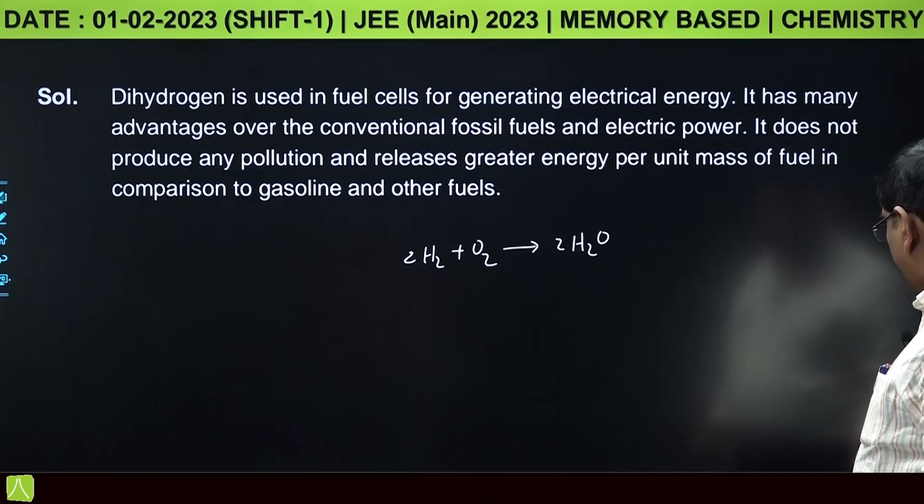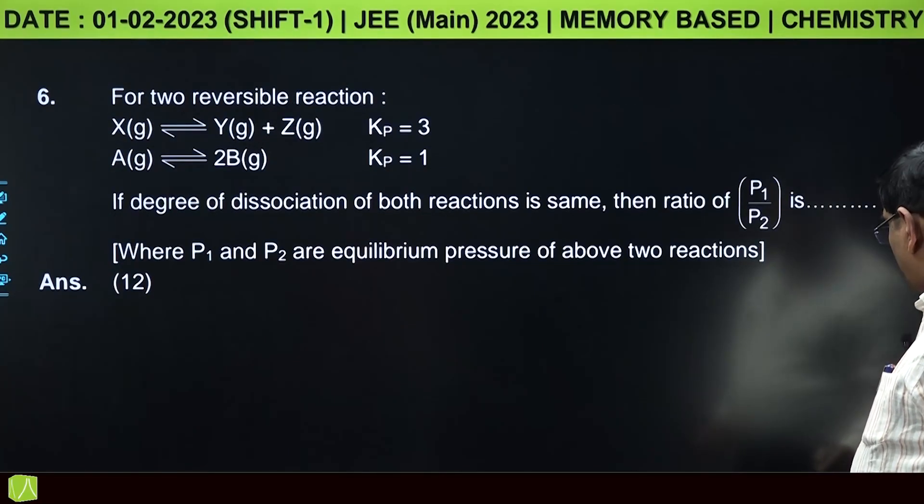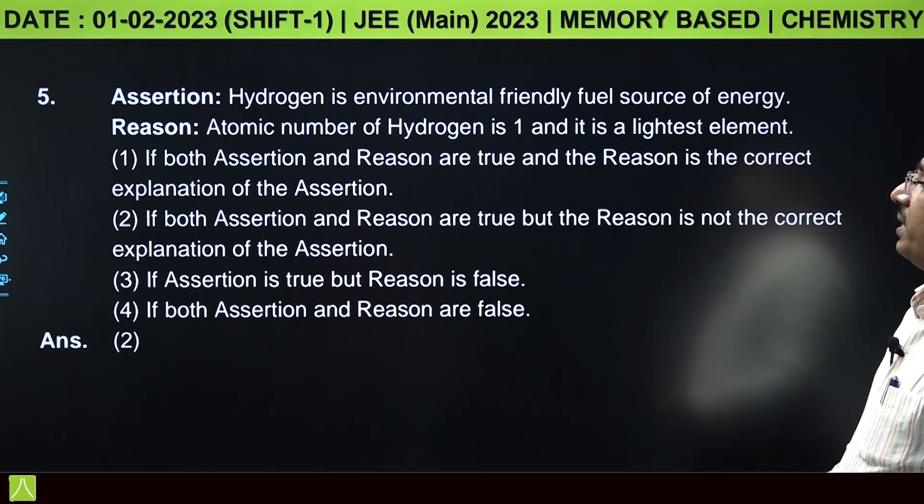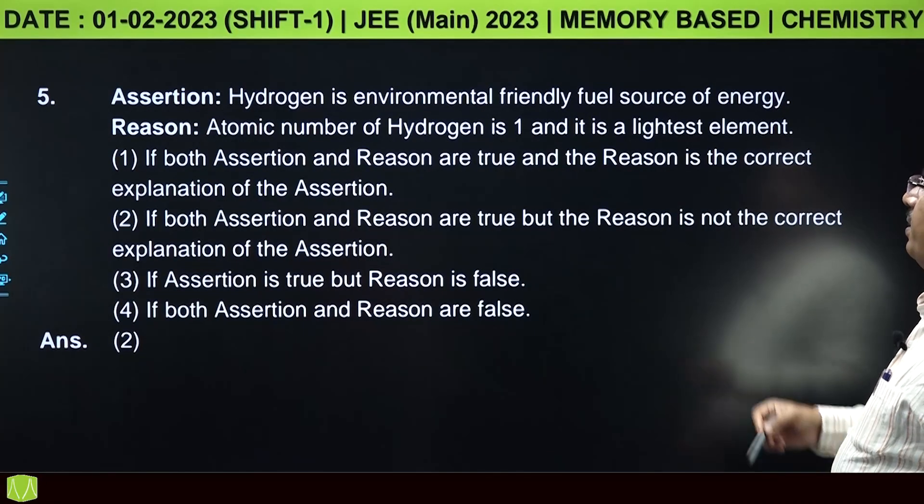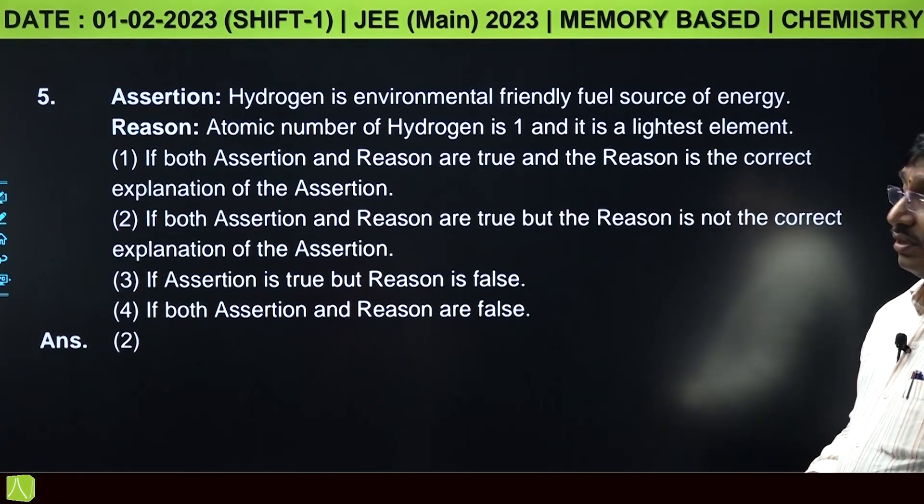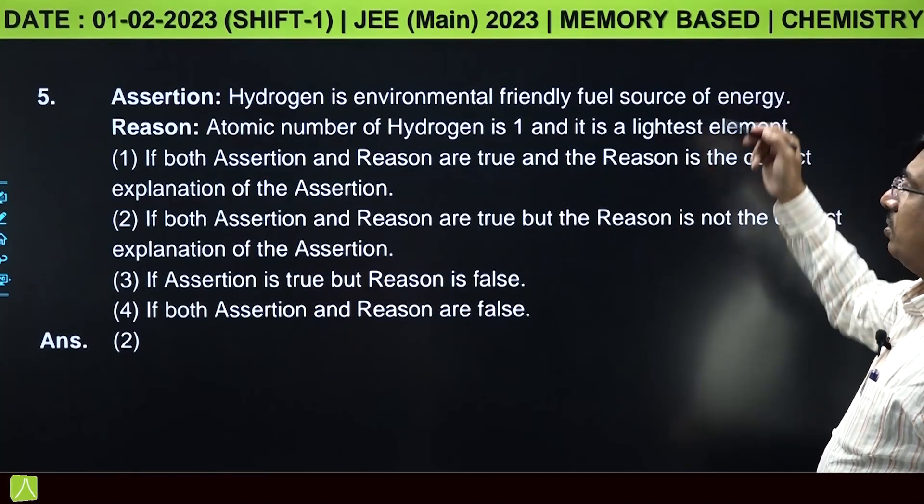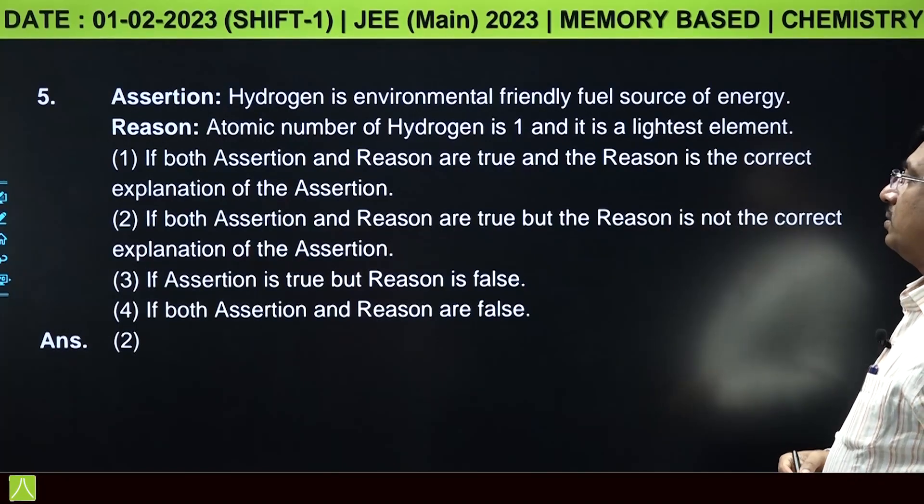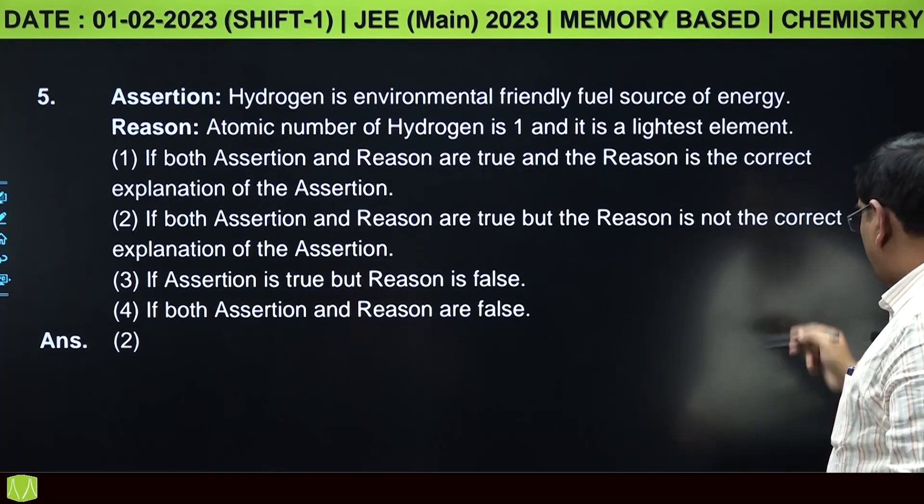It is environmental friendly. The second statement, the reason: atomic number of hydrogen is one and it is the lightest element. This is also correct but it is not the correct explanation. So assertion and reason both are correct but not the correct explanation.